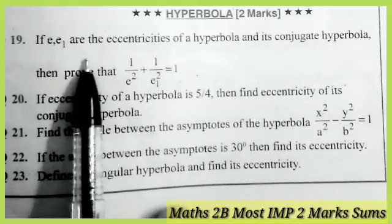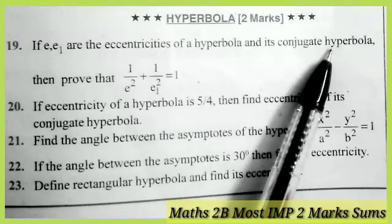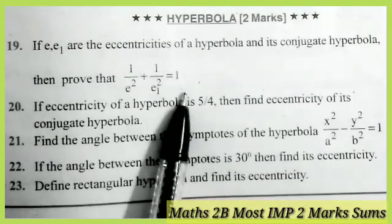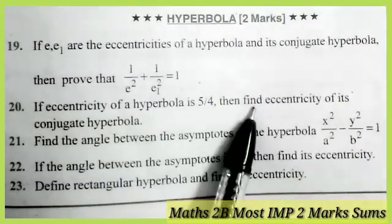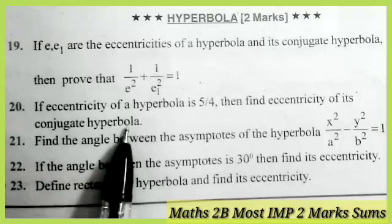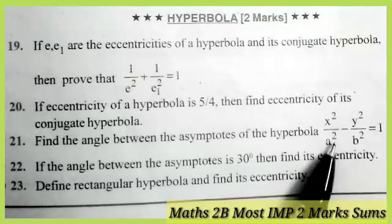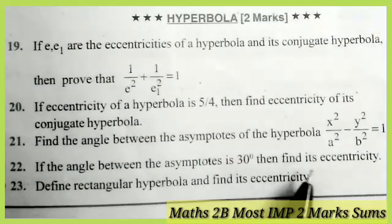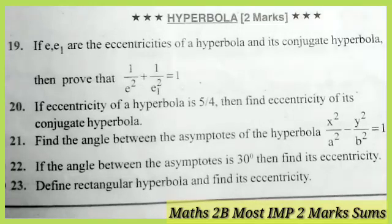Next topic: hyperbola. First one: if e and e₁ are the eccentricities of the hyperbola and its conjugate hyperbola, prove that 1/e² + 1/e₁² = 1. Next one: if the eccentricity of the hyperbola is 5/4, find the eccentricity of its conjugate hyperbola. Next one: find the angle between the asymptotes of the hyperbola. Next one: if the angle between the asymptotes is equal to 30 degrees, find its eccentricity. Next one: define rectangular hyperbola and find its eccentricity.